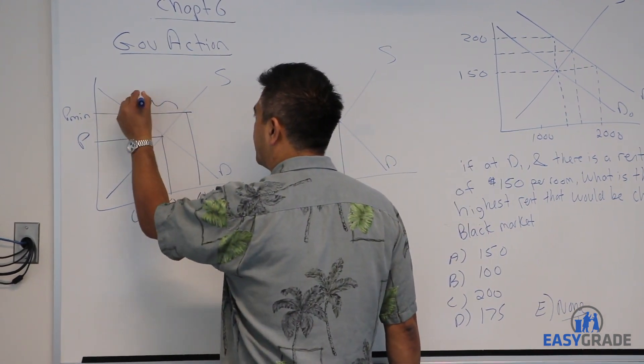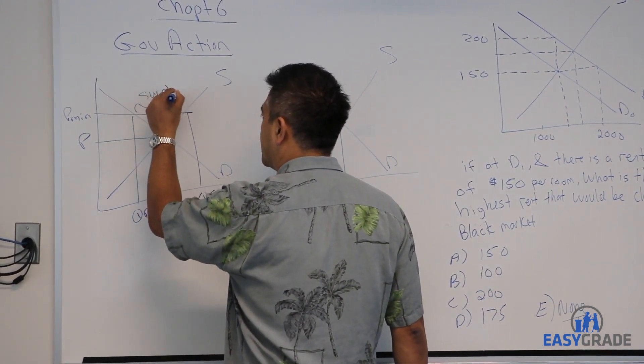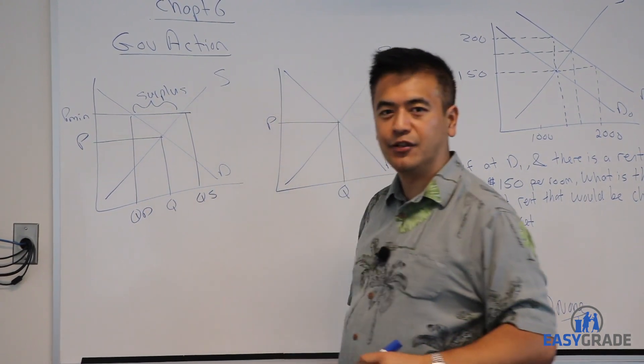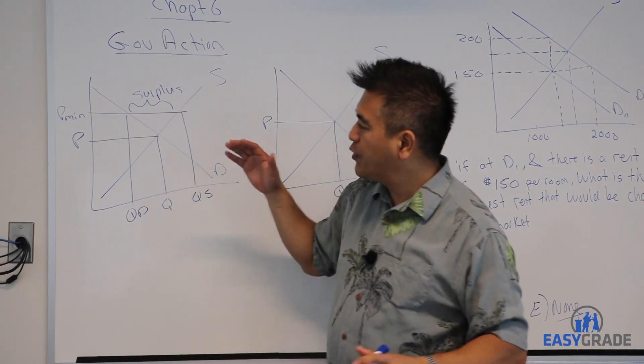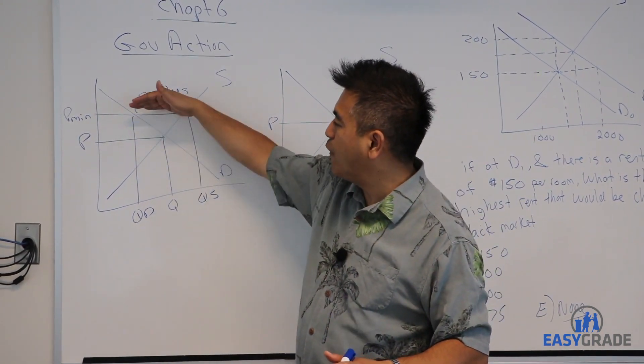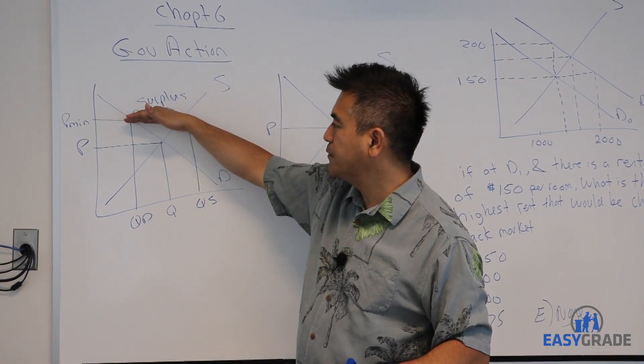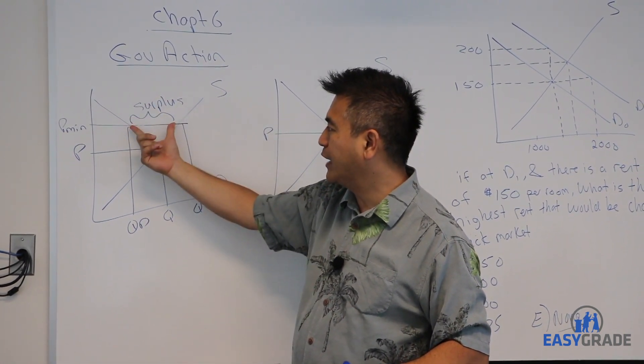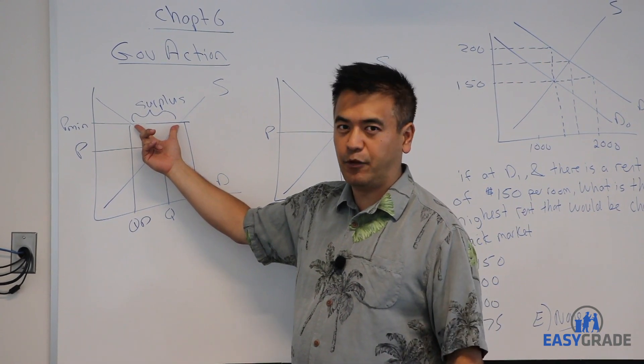The best example of this is a minimum wage where the wage for the workers cannot fall below the minimum wage and therefore it creates a surplus of workers. We call that unemployed.